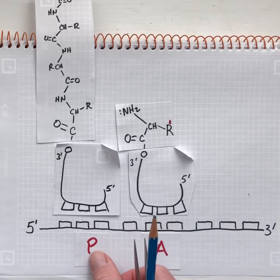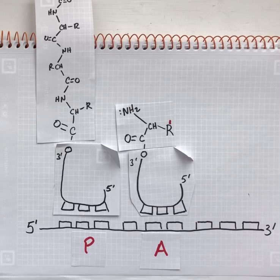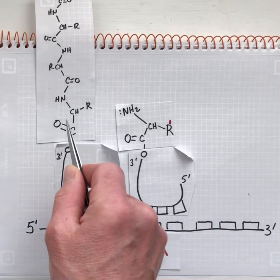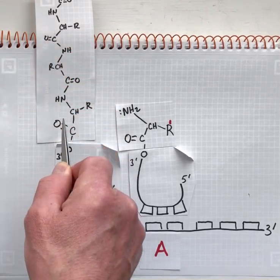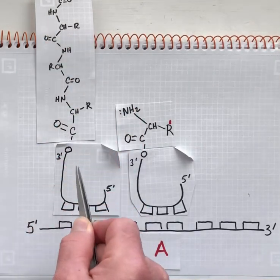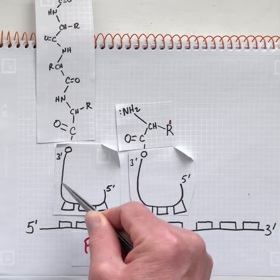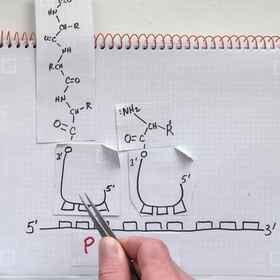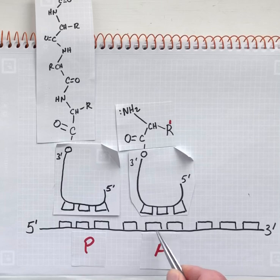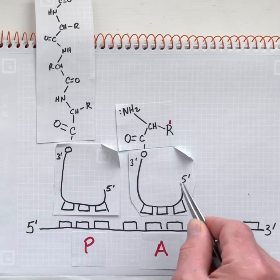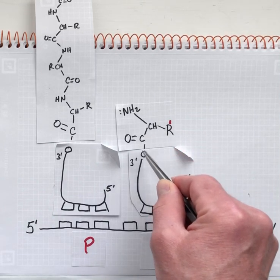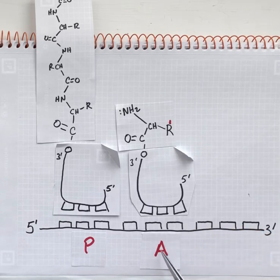We're beginning here with the scene set as if we have already completed several rounds of peptide bond formation. The polypeptide is attached here to the P-site tRNA, and we brought in a new aminoacyl tRNA that's occupying the A-site.